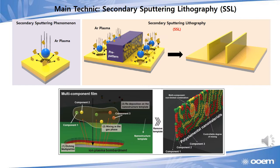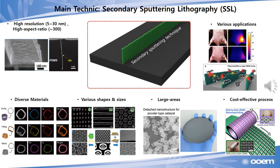The component and thickness can also be controlled easily in SSL. It has various advantages as shown in this slide. Firstly, it shows super high resolution and aspect ratio using diverse materials, and shape and size can also be controlled from linear pattern to circular pattern. Large area fabrication and mass production are also possible. So this technique can be applied to various applications including gas sensors, catalysts, energy storage, and bio-applications.